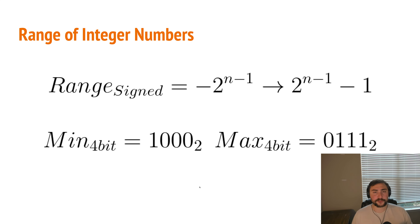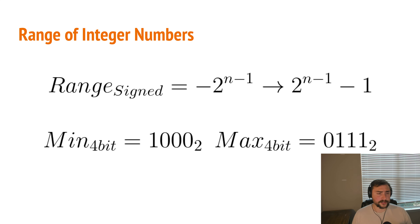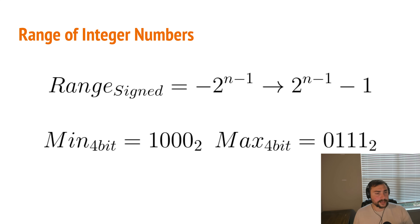That's a basic introduction to binary numbers and how we represent unsigned and signed integers, along with a bit of the theory behind it. In later videos we'll talk about other formats for integer numbers, how we perform arithmetic operations on binary numbers, and how we represent floating point numbers and strings via characters and ASCII encoding. That's going to do it for today — I'm Nick, and I hope you have a nice day.